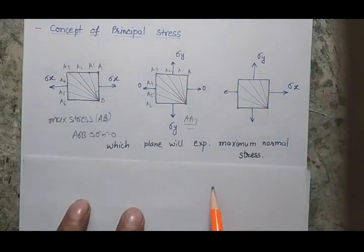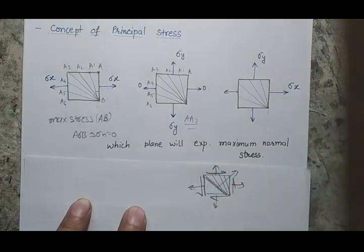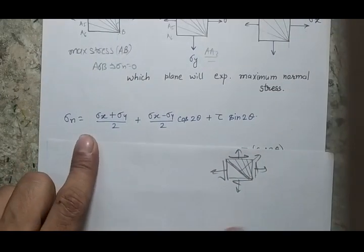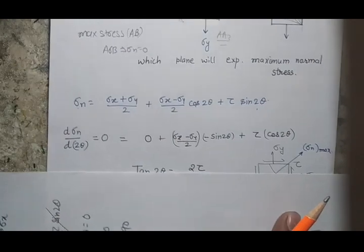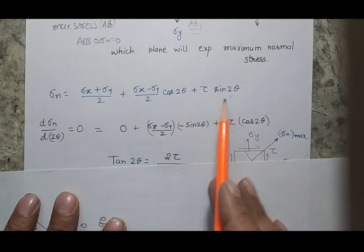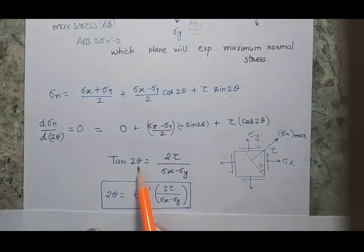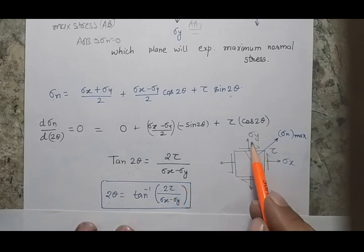If we have multiple stresses on our system, there will be a plane with maximum normal stress. To identify it, since normal stress is a function of 2θ, we differentiate the normal stress equation with respect to 2θ and set it to zero. This gives one angle. Rearranging, we get: 2θ = tan⁻¹(2τ / (σx − σy)), which tells us the angle where maximum normal stress exists.